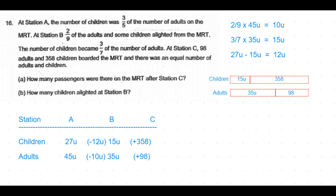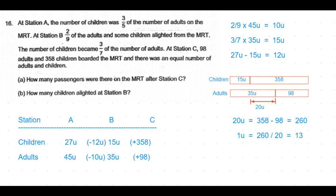Drawing the model: children is 15 units plus 358, adults is 35 units plus 98, and both are equal. The difference between children and adults on the units side is 35 minus 15 = 20 units, which equals the difference between 358 and 98, which is 260. So one unit equals 260 ÷ 20 = 13.